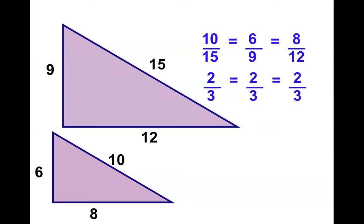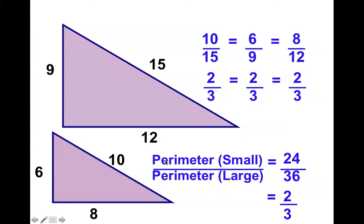Does everyone agree that we had 2-thirds, 2-thirds, and 2-thirds from the corresponding sides? Well, let's think about what the perimeters would be. The perimeter of the small, well, 10 plus 8 plus 6 is 24. The perimeter of the large, 15 plus 9 plus 12, 36. If I were to simplify this, guess what fraction I'd get? 2-thirds. And notice that the ratio of the perimeters is the exact same ratio of the side lengths.